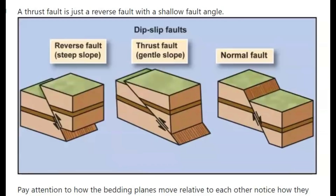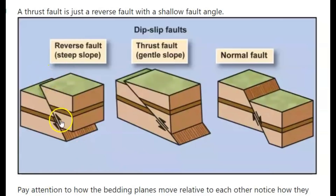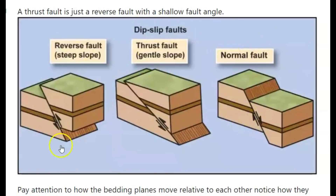It also has to do with how much of a dip — how much the angle of the fault moved. The reverse Thrust Fault was a deep, steep slope, where a regular Thrust Earthquake is a gentle slope, not as steep. These are all dip-slip faults.